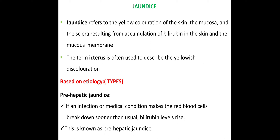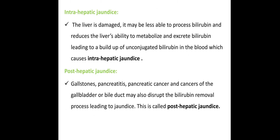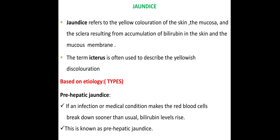There are three types: pre-hepatic jaundice, intra-hepatic jaundice, and post-hepatic jaundice. In pre-hepatic jaundice, an infection or medical condition causes red blood cells to break down sooner than usual, so bilirubin levels rise. For example, a patient with an infection undergoes abnormal, excessive RBC breakdown, causing bilirubin to rise. This is pre-hepatic jaundice.